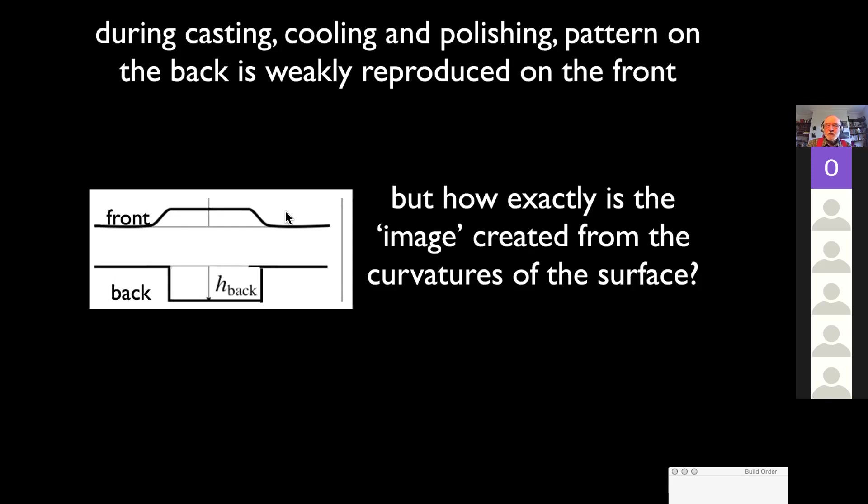So how is this image created? I've used the word image in quotes because it's not an image in the usual sense. If it were, you'd have to focus it. You'd have to move the mirror back and forth relative to the wall or the screen until it was sharp. But not the case. You see a sharp image over a wide range of distances. So it's not an image in the usual sense. So this was an optics problem.